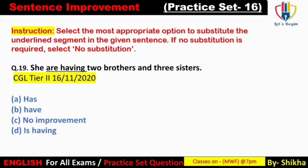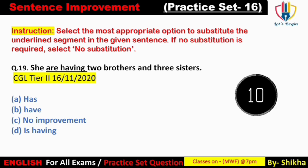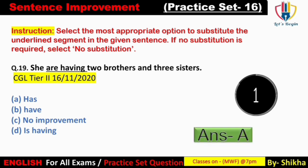Next: 'She are having two brothers and three sisters.' 'She' ke saath 'are' ka use nahi hota — sentence galat hai. Option D mein 'is having' — continuous form use nahi kar sakte, kyunki iska matlab ho jata hai ki woh do bhaion aur teen bahnon ko own kar rahi hai — continuous form mein galat hoga. Simplest form use karna hoga — 'she' ke saath 'has.' Answer: option A — 'She has two brothers and three sisters.'